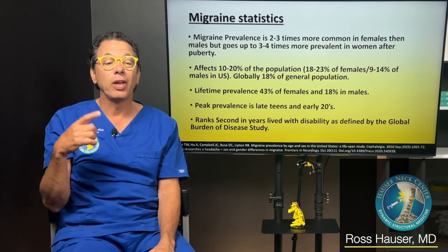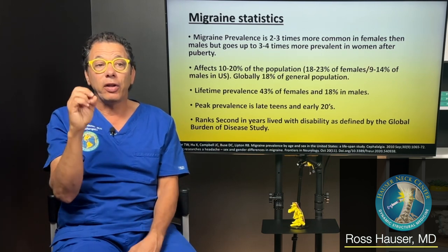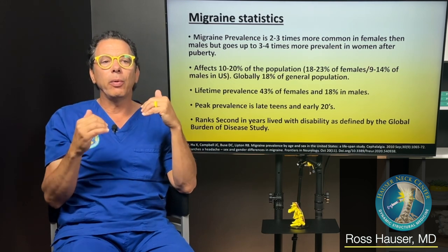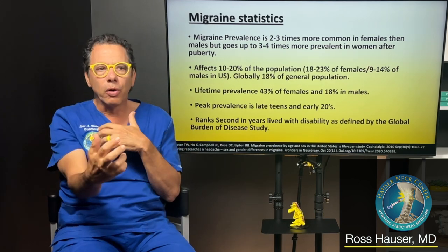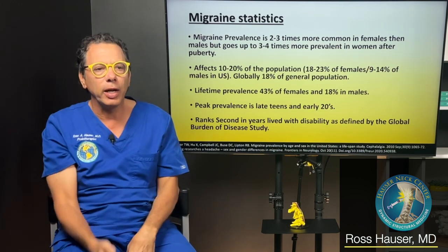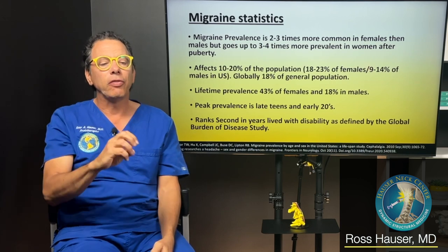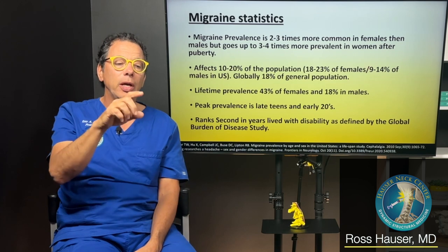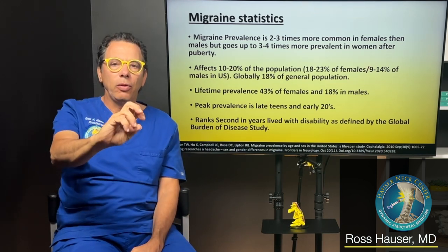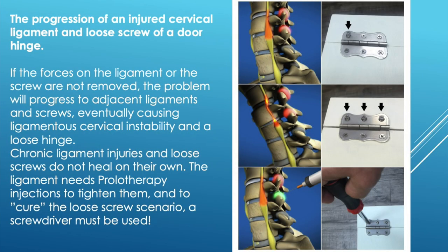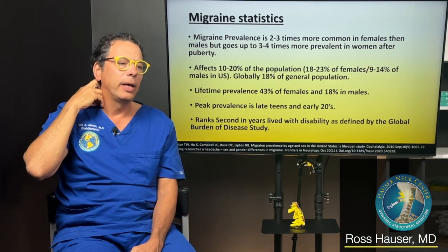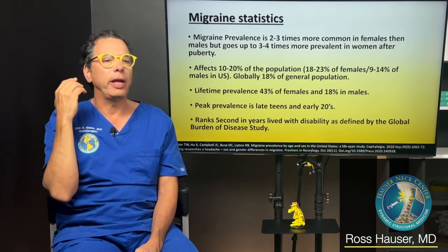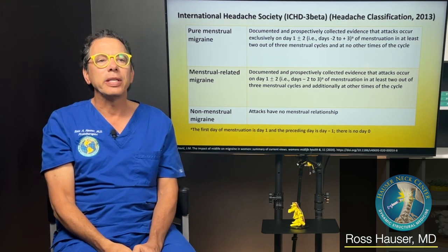Migraine ranks second in years lived with disability per the Global Burden of Disease Study. Anyone with migraine headaches who also has neck tension, clicking or popping in the neck, and whose condition is getting worse — that tells you whatever structural condition is causing it is getting worse. Ligamentous cervical instability is similar to a loose screw on a door hinge — every time you open and close the door, the screw gets looser. So if you have ligamentous injury in the neck, it will progress, and migraine headaches related to it will be progressive.